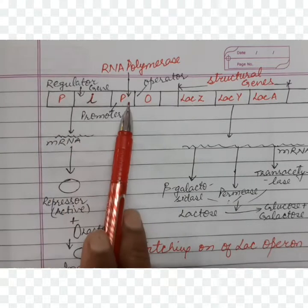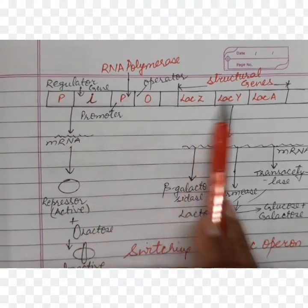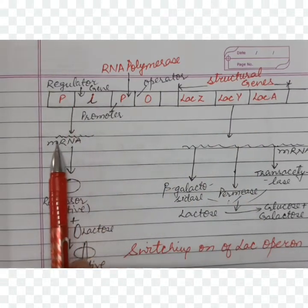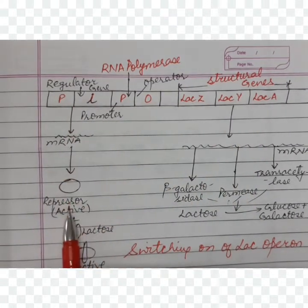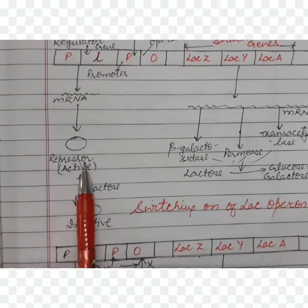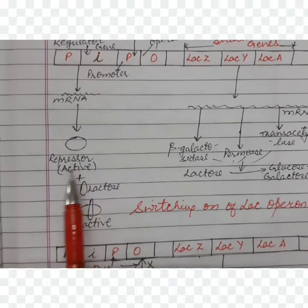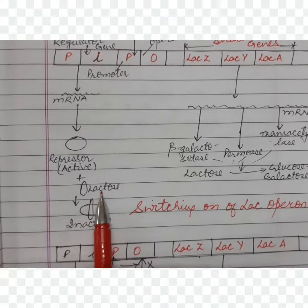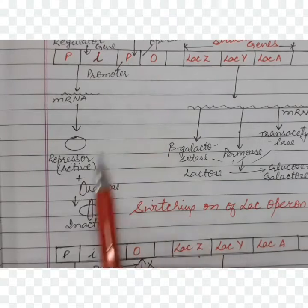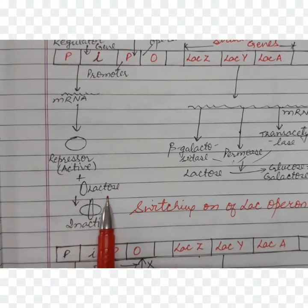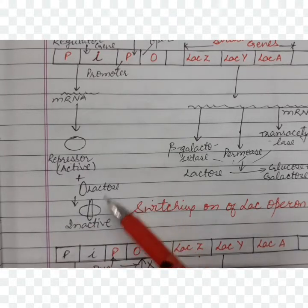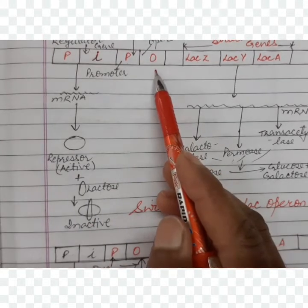Looking at the diagram: there is a regulator gene, promoter, operator, and three structural genes. The regulator gene produces a messenger RNA which makes a repressor protein. This repressor is active when lactose is absent — it will bind to the operator. But when lactose is added, this repressor becomes inactive and does not bind to the operator.